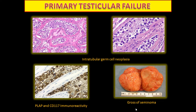In primary testicular failure it is essential to look for intratesticular germ cell neoplasia, because there is an increased risk of malignant development — in particular seminoma. We use placental alkaline phosphatase (PLAP), CD117, also called CKID, which in this case shows cytoplasmic and membranous positivity.